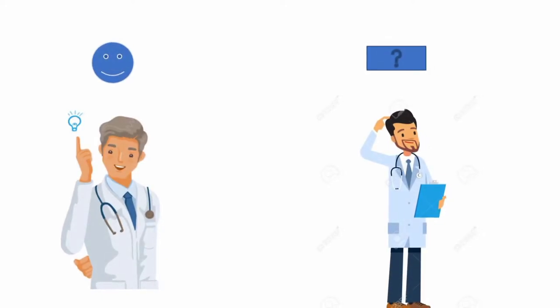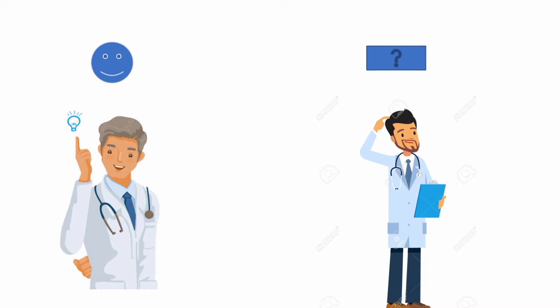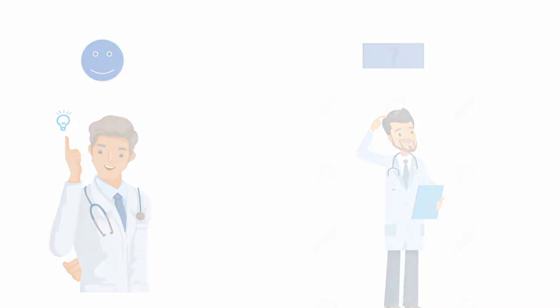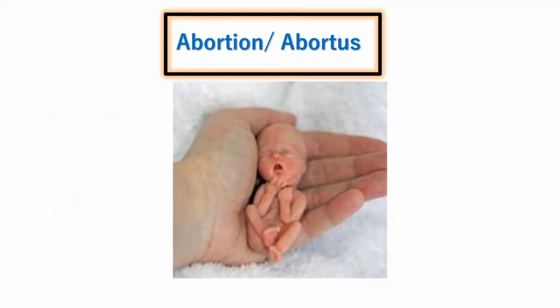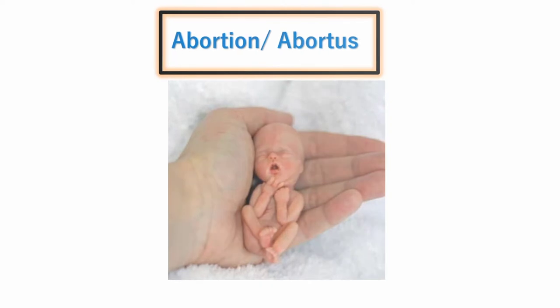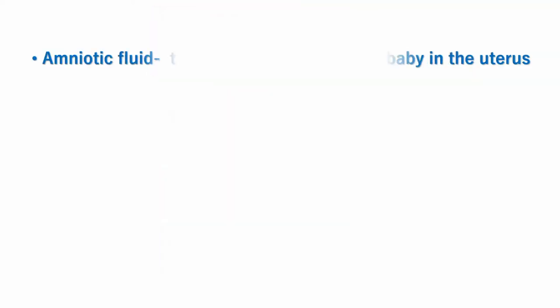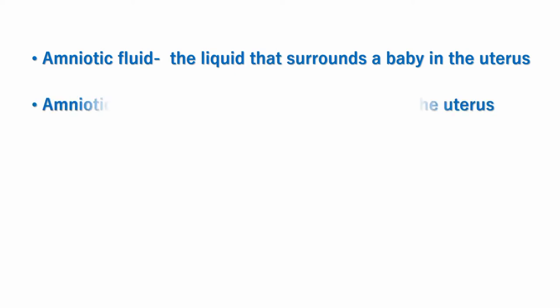Most medical students may already be familiar with these terms, but if you are still confused or forgetting, this will be helpful for you. Abortion or abortus: a fetus or embryo is removed or expelled from the uterus during the first 20 weeks of gestation, or a fetus with a birth weight less than 500 grams. It is also known as a spontaneous miscarriage.